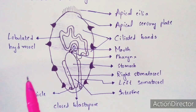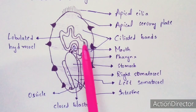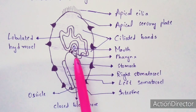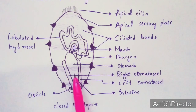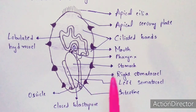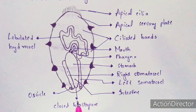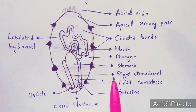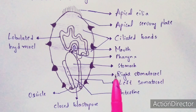This is the lobulated hydrocoel, this is the mouth, this is the pharynx, this is the stomach, here is the right somatocoel, this is the left somatocoel, this is the intestine, this is the blastopore, and this is the ossicle. The digestive system is well developed, starting from the mouth and ending towards the anus, indicating a complete alimentary canal: mouth, pharynx, stomach, intestine, and anus.